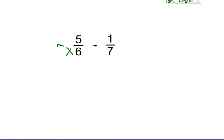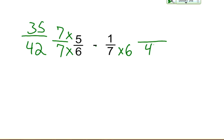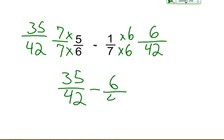Which is going to give us 42 and 35. And then, of course, we're going to go to the other side and multiply by 6, which is going to give us 42 and 6. And now I can subtract those two.